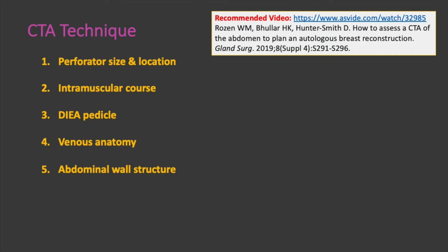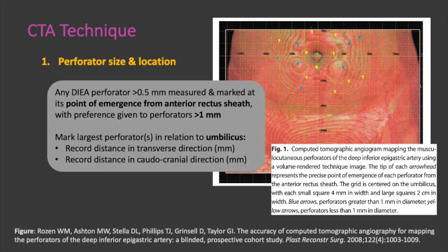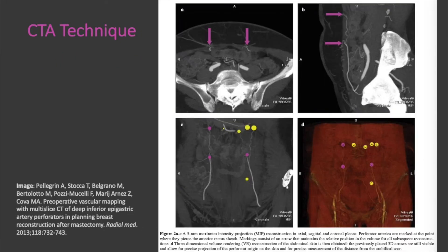The list shown here highlights the data points of interest. For step 1, perforator size and location: any DIEA perforator greater than 0.5 millimeters should be measured and marked at its point of emergence from the anterior rectus sheath. Preference is given to perforators greater than 1 millimeter. You should mark the largest perforator in relation to the umbilicus in both transverse and caudocranial directions. This figure shows a maximum intensity projection reconstruction in the axial, sagittal, and coronal planes. Perforator arteries are marked at the point where they pierce the anterior rectus sheath, and 3D volume rendering reconstruction of the abdominal skin is then obtained. The previously placed arrows allow for precise projection of the perforator origin on the skin for measurement relative to the umbilicus.